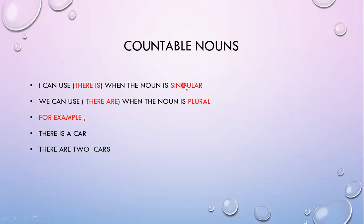خلينا نيجي للcountable nouns. أنا كتبت لكم هون إنه I can use 'there is' — يعني هنالك — when the noun is singular. يعني إذا الإسم مفرد باستخدم there is، لأنه الـ is للمفرد. يعني there is a book، there is a car. برضو we can use 'there are' when the noun is plural. يعني الاسم المعدود بقدر أستخدم له is وبقدر أستخدم له are، حسب إذا كان مفرد يا جمع. يعني هاي الكار، السيارة، أنا بقدر أعدها — بدي أحكي there is a car.